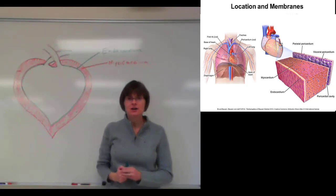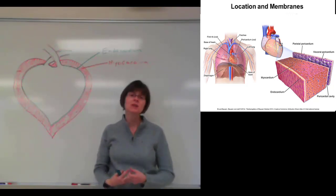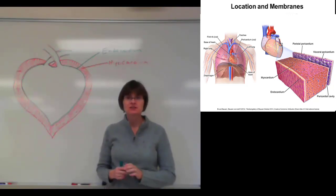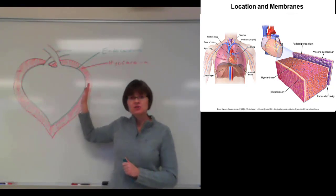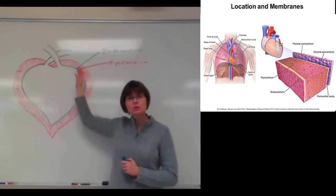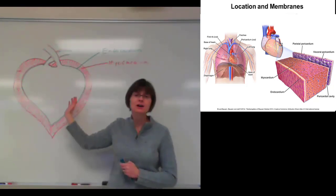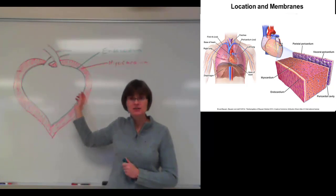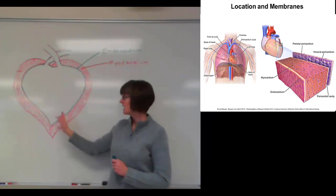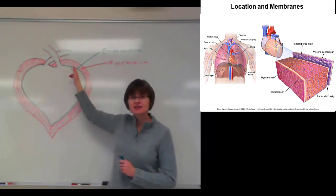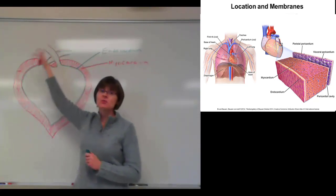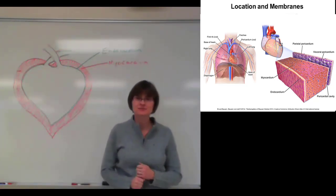The endocardium, being very, very smooth, is important for a couple of reasons. It allows the blood to move smoothly through the heart, and it also prevents clotting because there's nothing for the platelets to stick to. This smooth layer on the inside of the heart is actually continuous with the smooth lining of the blood vessels.